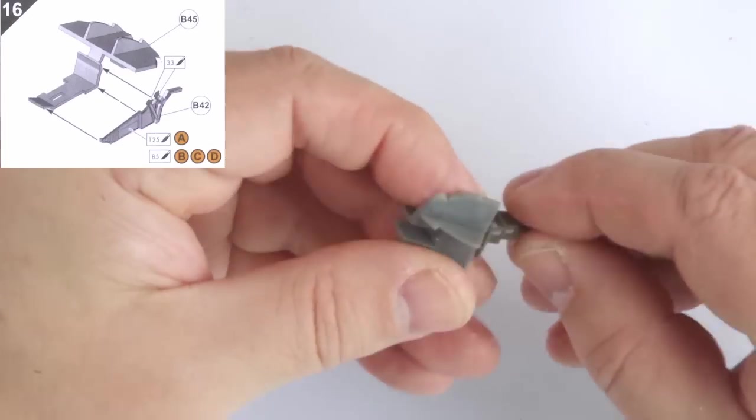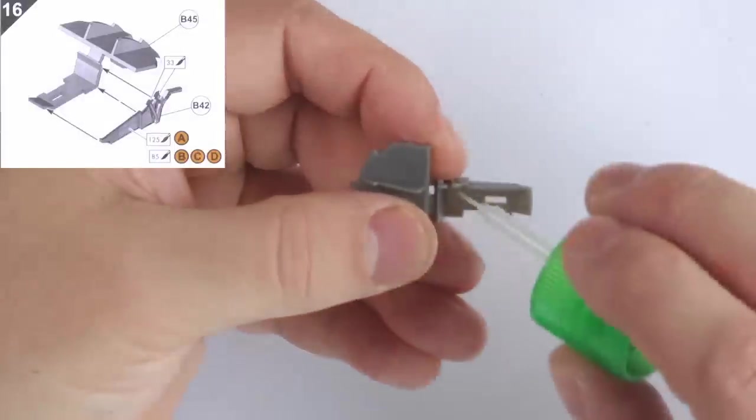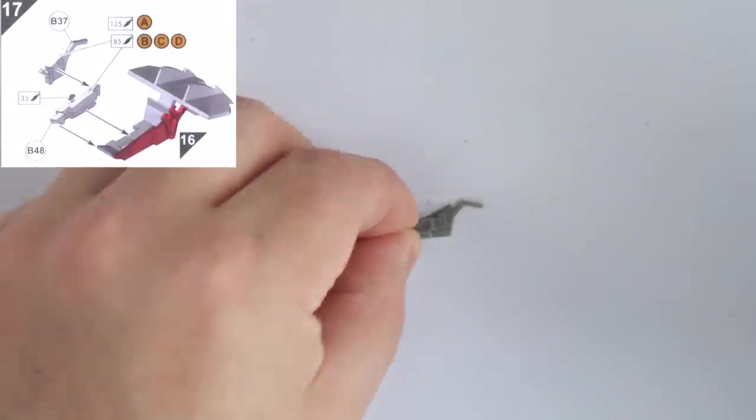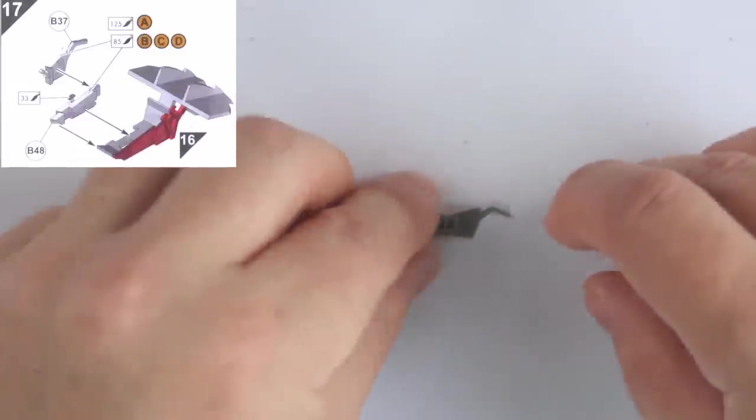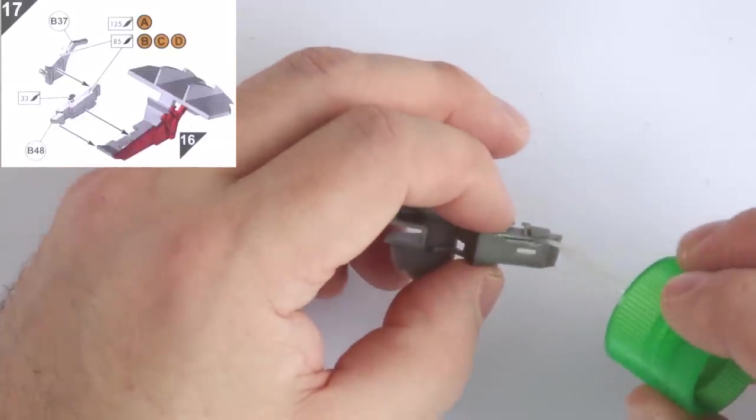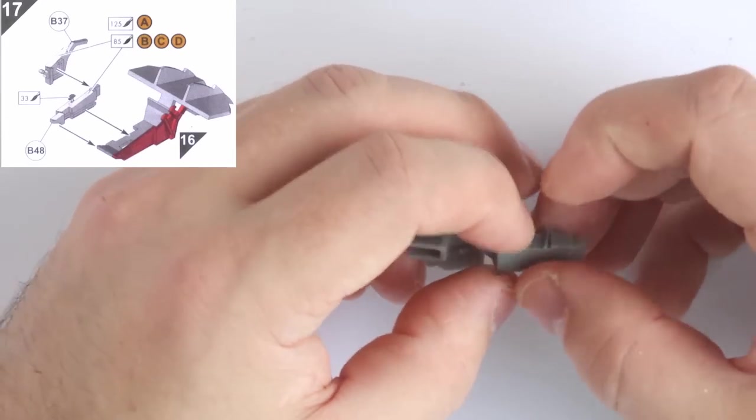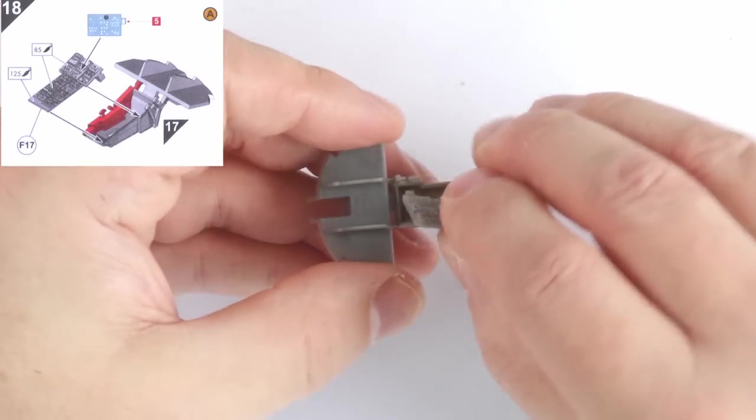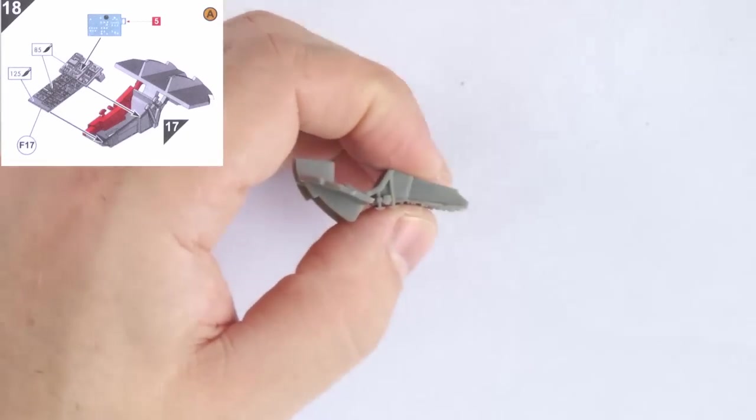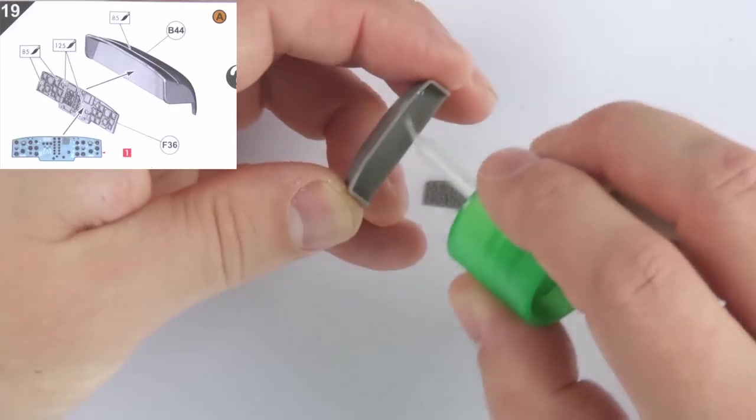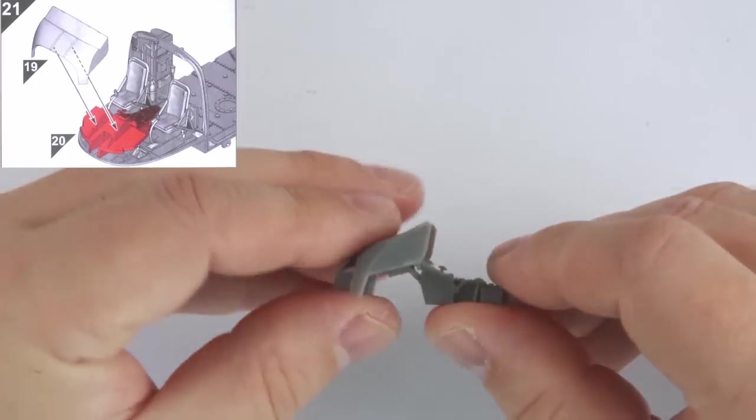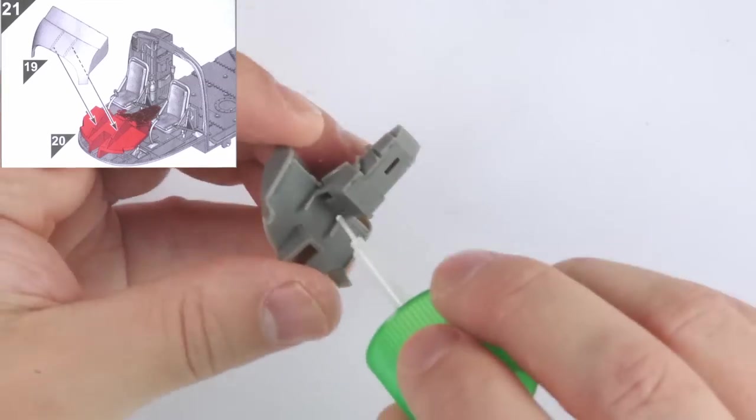We then move onto the main instrument console, which builds up over the course of steps 16 to 21. This follows a simple and logical progression, and the detail Airfix have included here is very impressive. You could certainly go to town painting this all up if you wanted. Decals are supplied as well if you don't want to go that route, which is what I applied after painting. Step 19 has the main flight instrument panel, two of which are provided depending on the variant, attached to its cowling. The last step here is to join these two assemblies, as I again left these out of the cockpit until after interior painting.